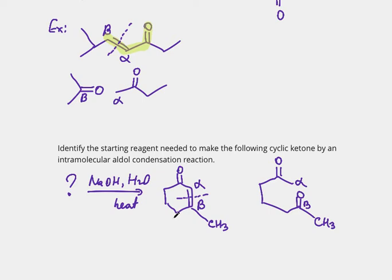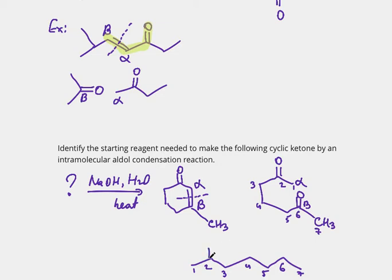This must have been my starting material that underwent aldol condensation to give me this product. To draw it more clearly, I number the carbons one through seven, draw a seven-carbon chain numbered one through seven, and place a double bond=O on carbon two and a double bond=O on carbon six. That is my starting material.